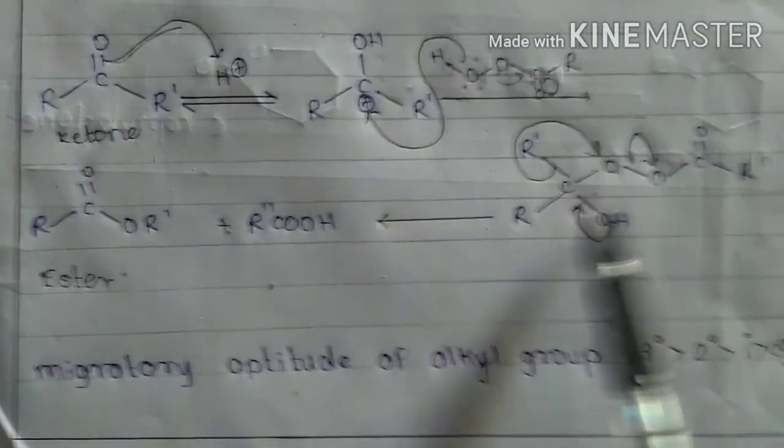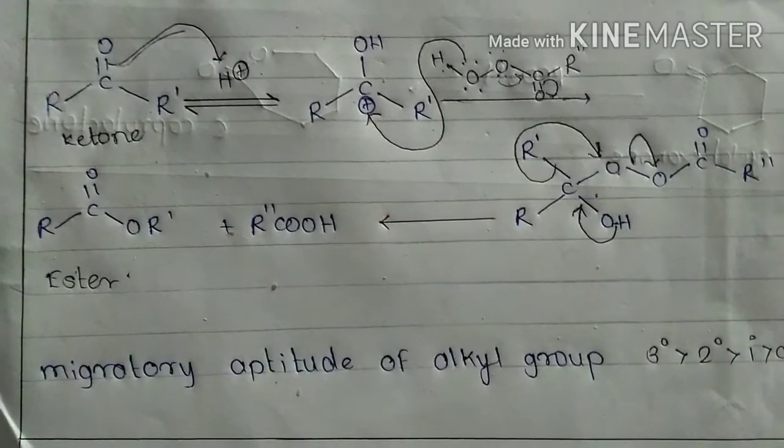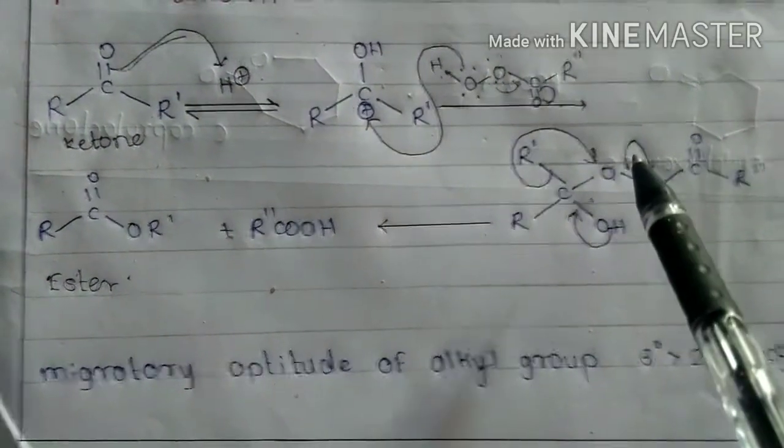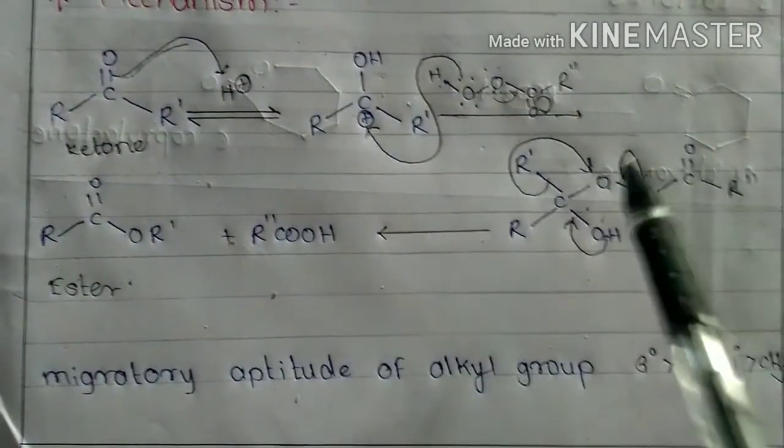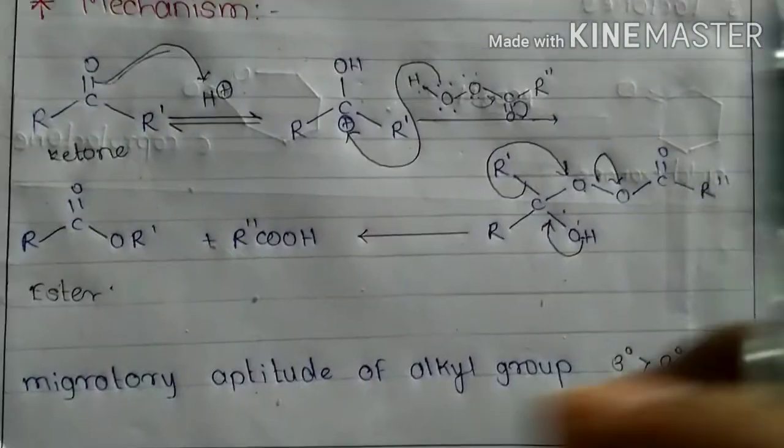It is electron deficient. So electron donating groups migrate easily.